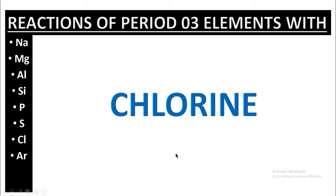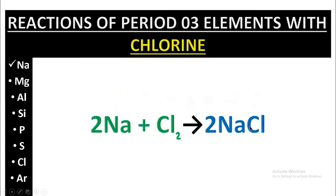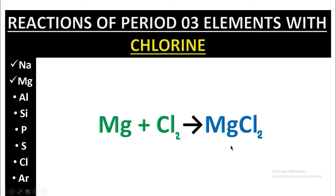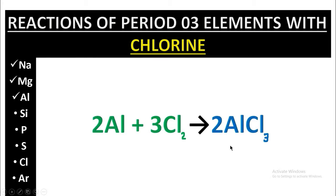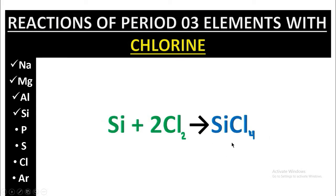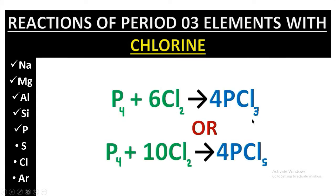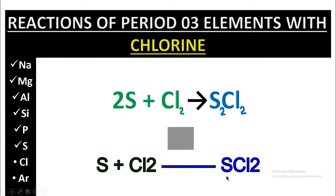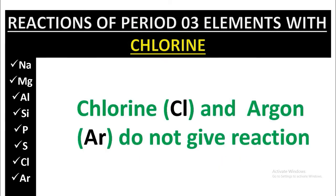Finally, we will go through the reactions of Period 3 elements with chlorine. Sodium reacts with chlorine to give NaCl. Here is magnesium's reaction, aluminum's reaction, and silicon's reaction. Phosphorus gives two reactions with chlorine.